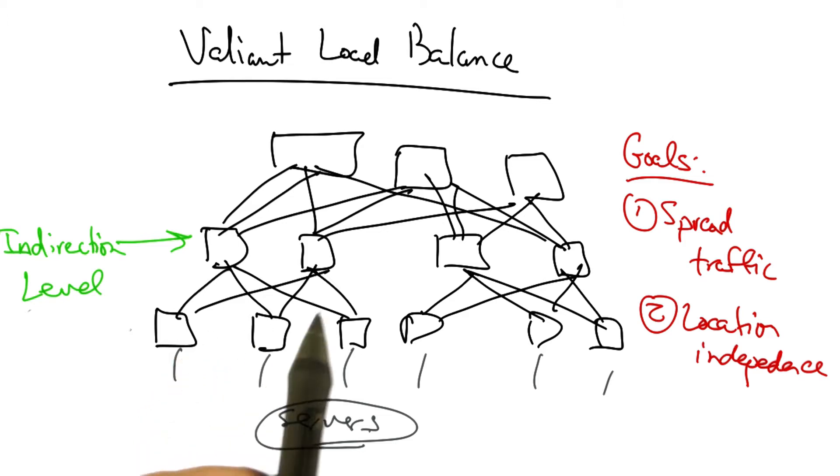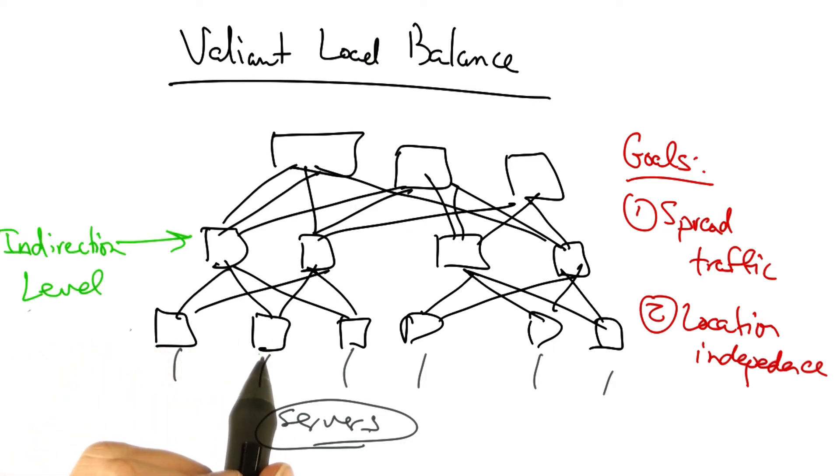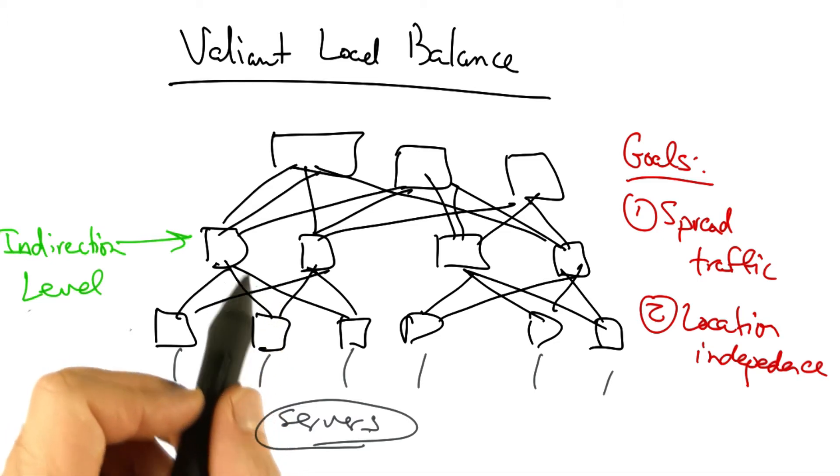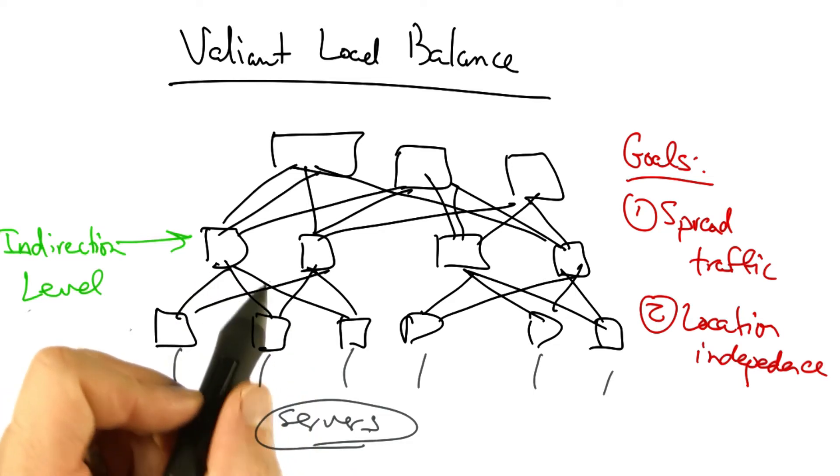VL2 achieves this by inserting an indirection level into the switching hierarchy. When a switch at the access layer wants to send traffic to a destination, it first selects a switch at the indirection level to send the traffic at random.